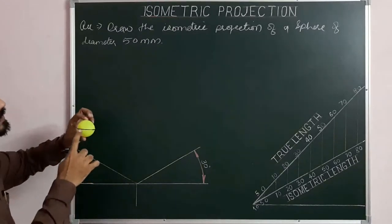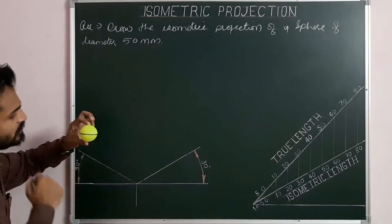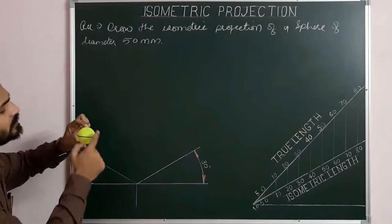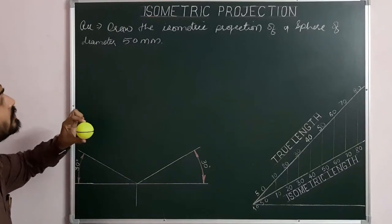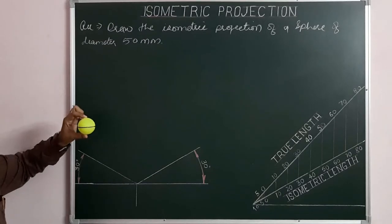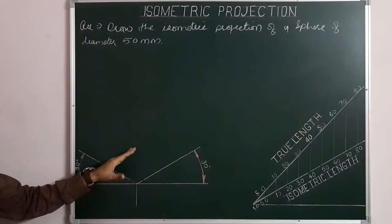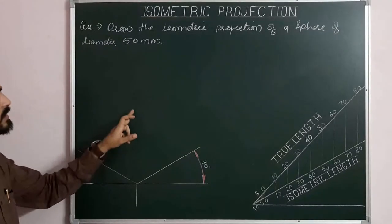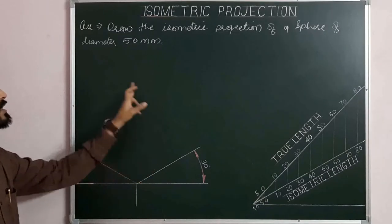From there we will get the center of the sphere. Then from the center of the sphere, we simply have to draw a circle by taking the true radius of the sphere, which is 25 here. So we start from the point of contact, mark the solid center, and then draw the circle.